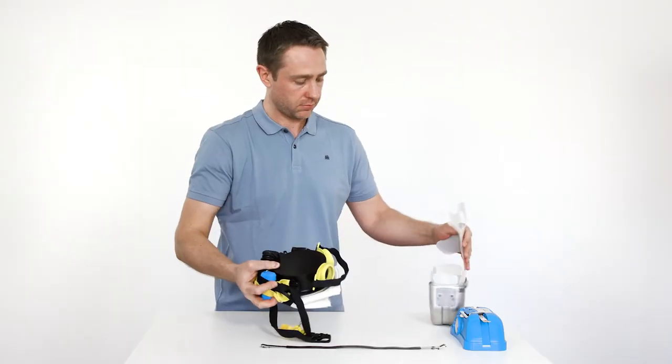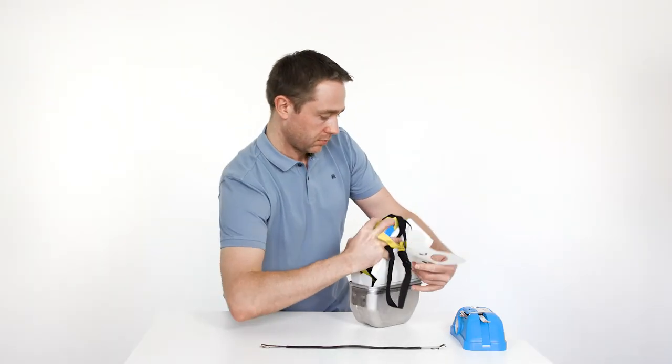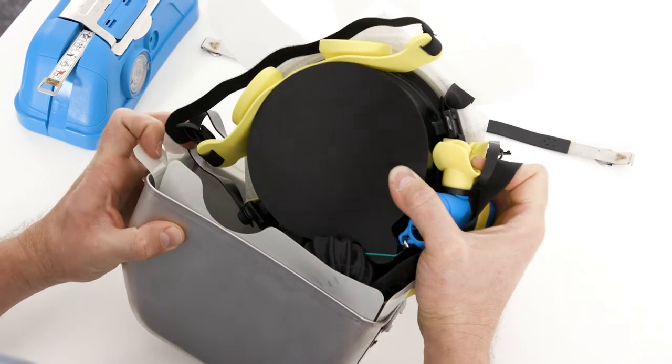Place the drawstring over the functional part and hold it firmly. Insert the functional part into the lower part of the housing.